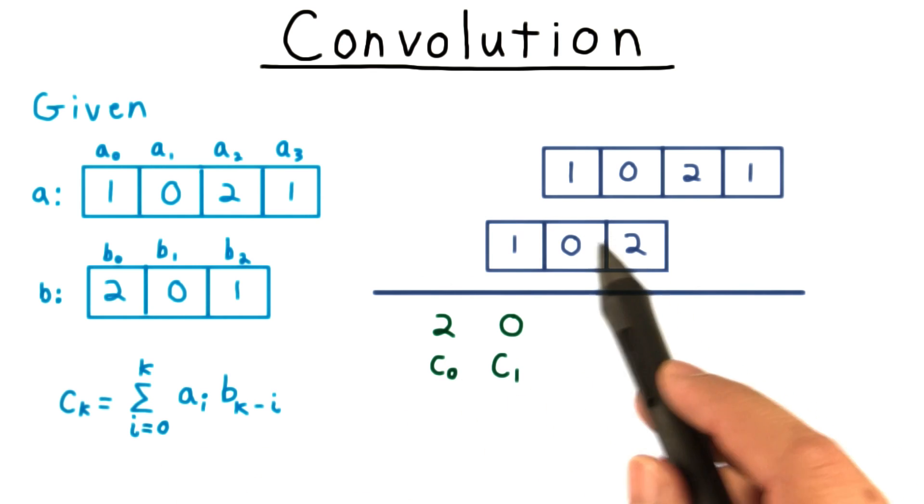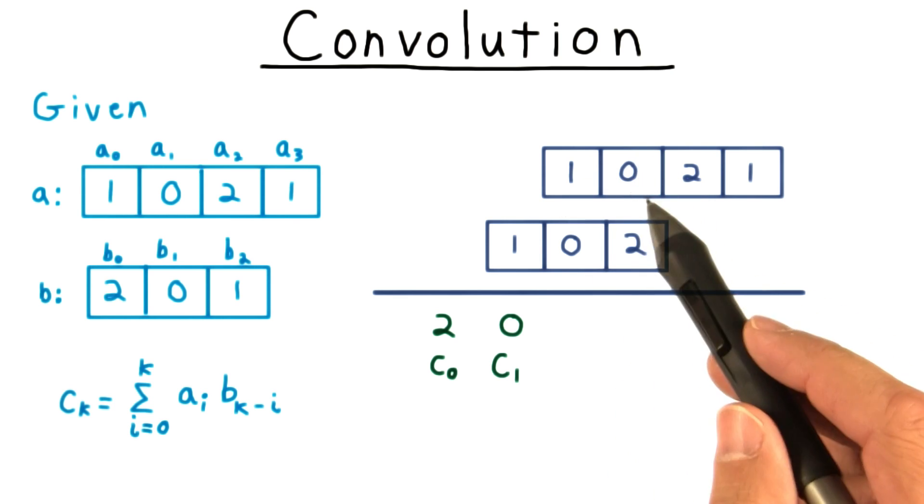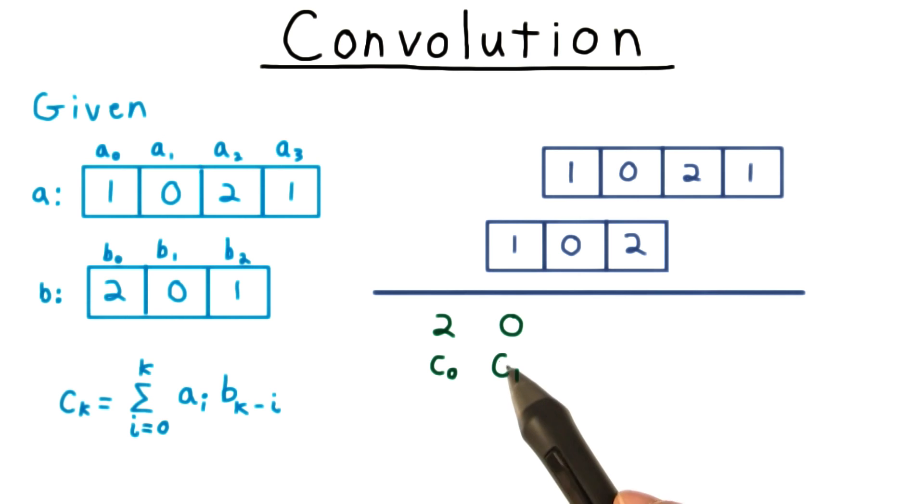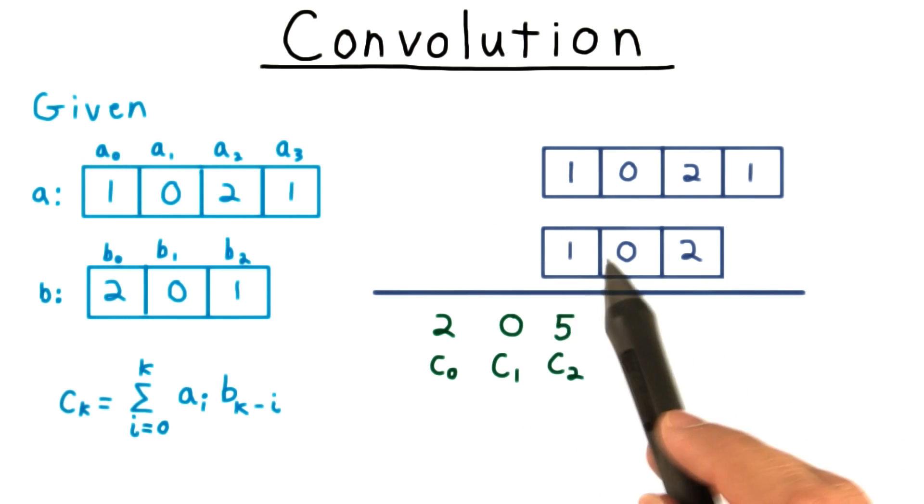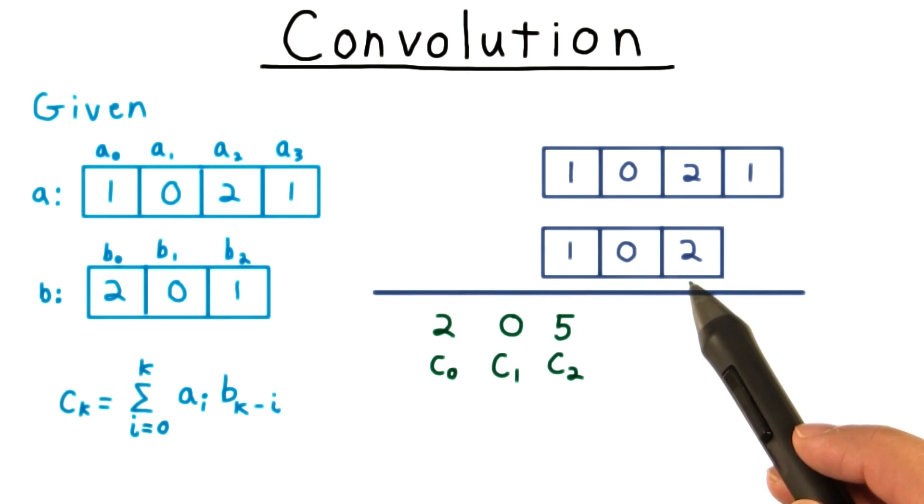For k equals 1, we shift the sequence over, multiply the corresponding elements and add those up. That's a total of 0, and that becomes c1. For k equals 2, we shift the b sequence over again, multiply the corresponding elements, and add them up for a total of 5.